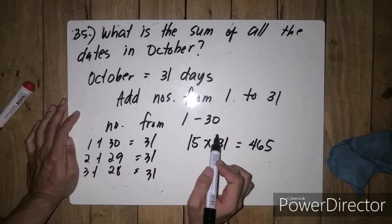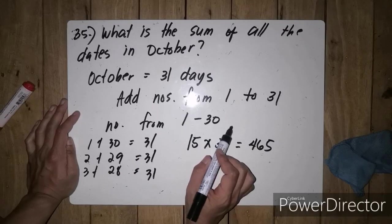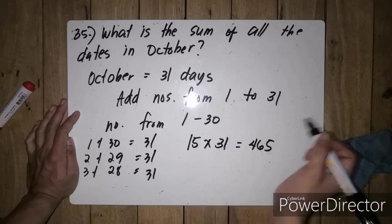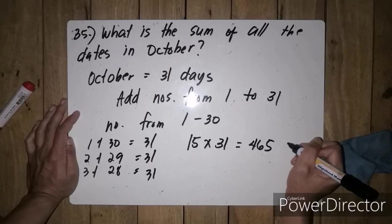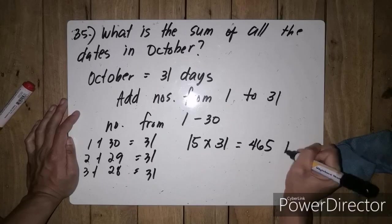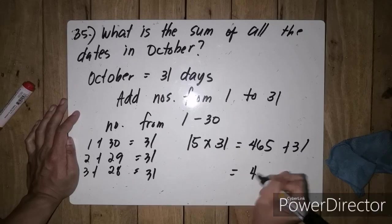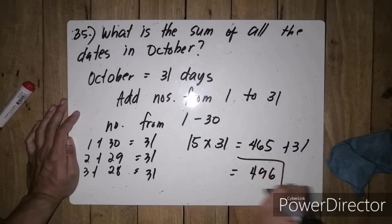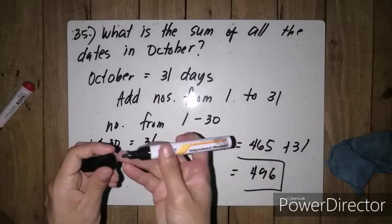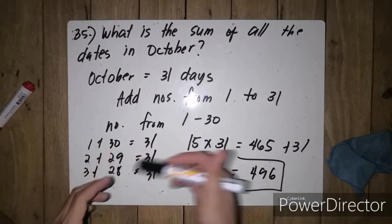Since ang il-add nating number ay from 1 to 30, i-add pa natin yung pang 31 na number. So 465 plus 31 is equal to 496. So our answer for this problem is 496.